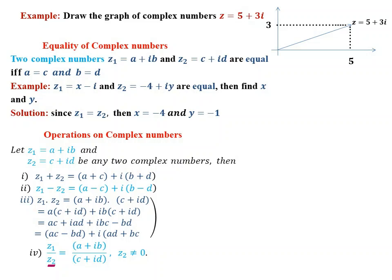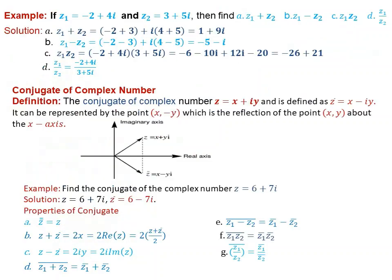For division, z1 over z2 equals a plus ib over c plus id, whenever z2 or c plus id is different from zero. We proceed by multiplying numerator and denominator by the conjugate of z2.